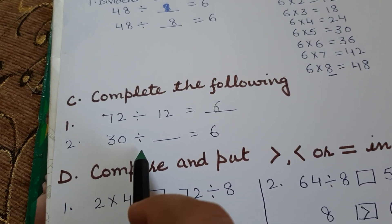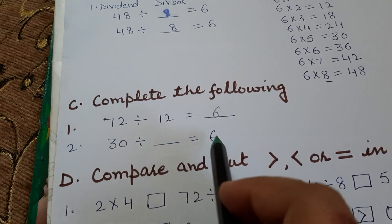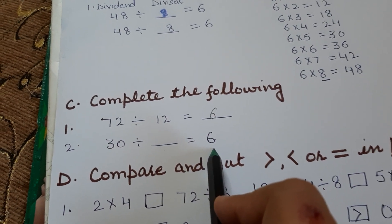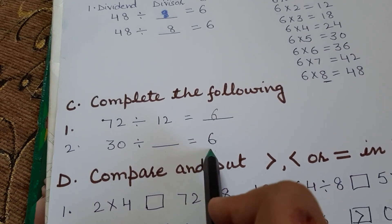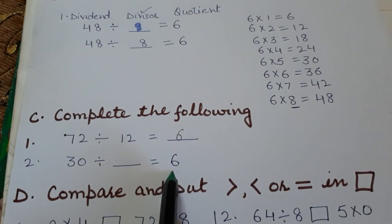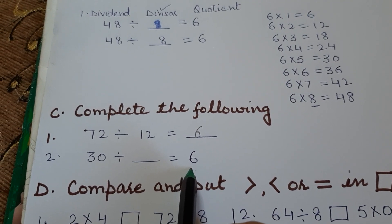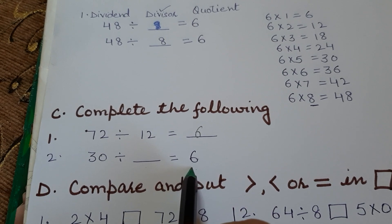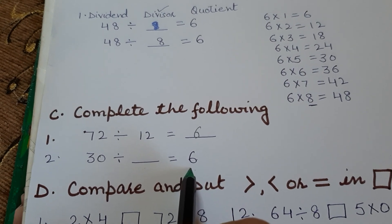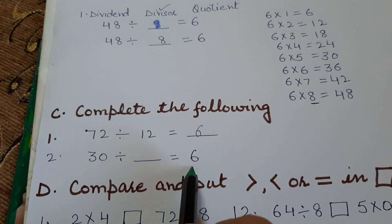Next is: 30 divided by which number gives 6 as the answer? We will recall the 6-times table: 6 ones are 6, 6 twos are 12, 6 threes are 18, 6 fours are 24, 6 fives are 30. So the divisor is 5.